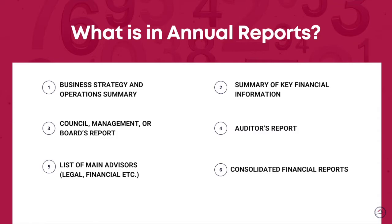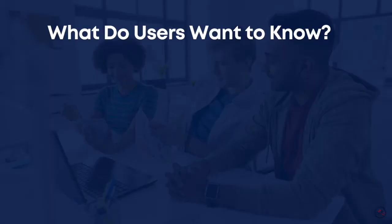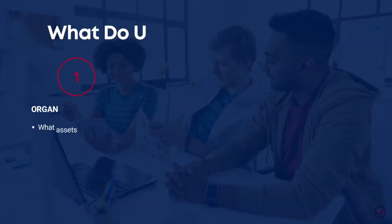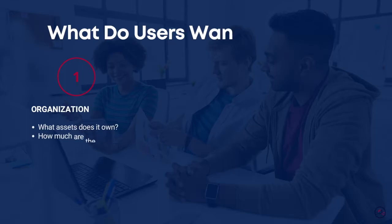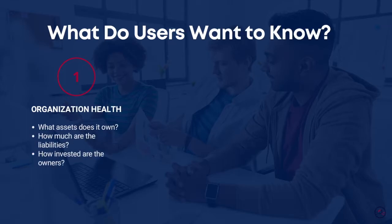Annual reports are designed with diverse users' needs in mind. In a previous video, we talked about internal and external users and how their needs vary. Users typically want to know three things. First, how financially healthy is an organization? This is answered by assessing the balance sheet — more specifically, looking at the changes in assets, liabilities, and equity year after year.